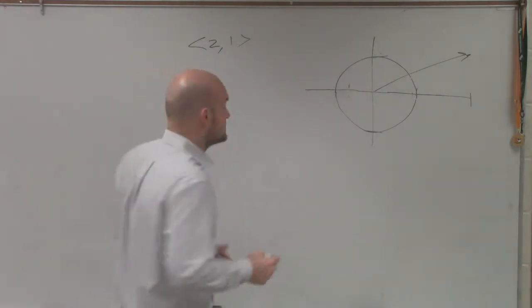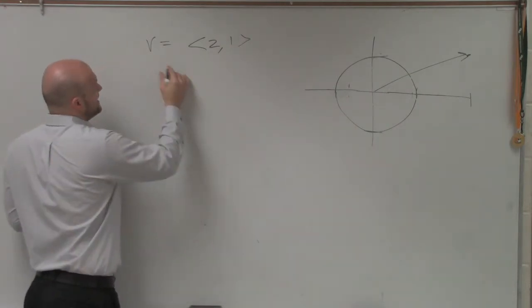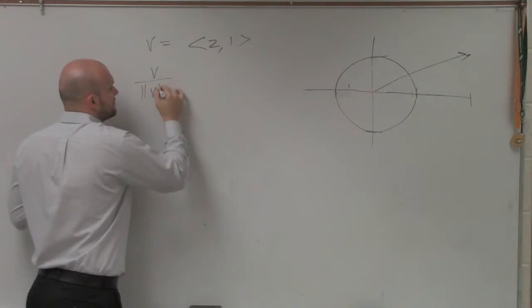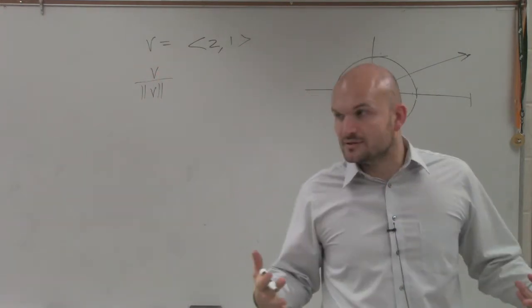But what we found out is we said, all right, how do you convert a vector then to a unit vector? So this is one of the formulas that we went over. If I wanted to find the unit vector, all I need to do is take v, divide it by the magnitude of v, right?